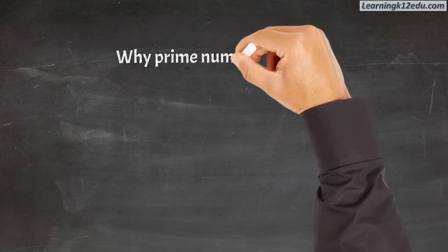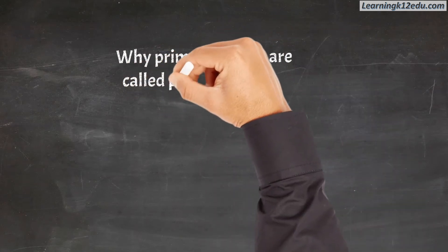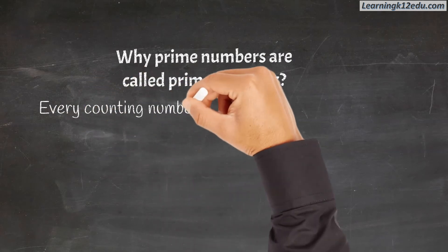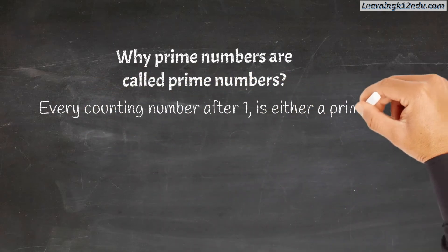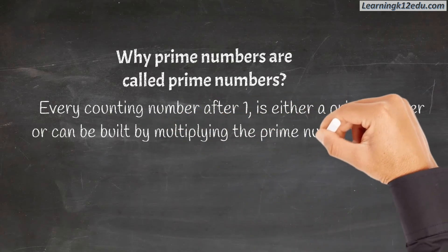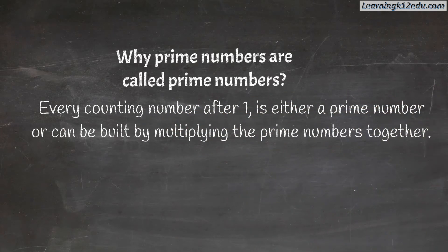Why are prime numbers called prime numbers? Every counting number after 1 is either a prime number or built by multiplying prime numbers together. For example,